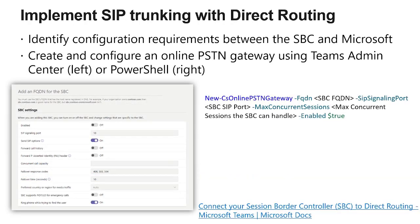As we move on to connecting the SBC to Microsoft Teams, it's important to understand what's required — whether it's ports, IP addresses, protocols, or FQDNs. There's a lot that goes into successfully connecting an SBC via SIP trunk to Microsoft Teams. There's a screenshot showing how to define and connect an SBC via the Teams admin portal, but also PowerShell. That's a common theme: there's a Teams admin portal option, a PowerShell option, and some configurations only available via PowerShell cmdlets.